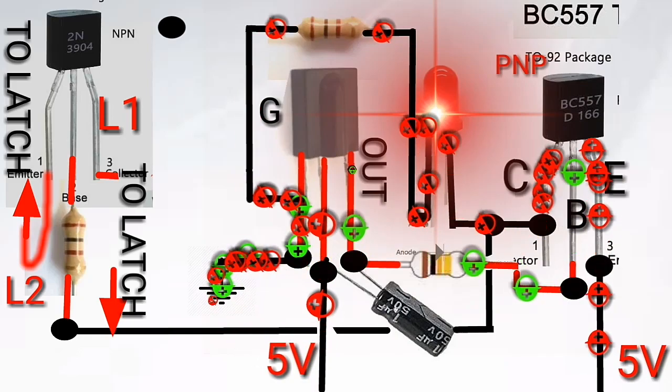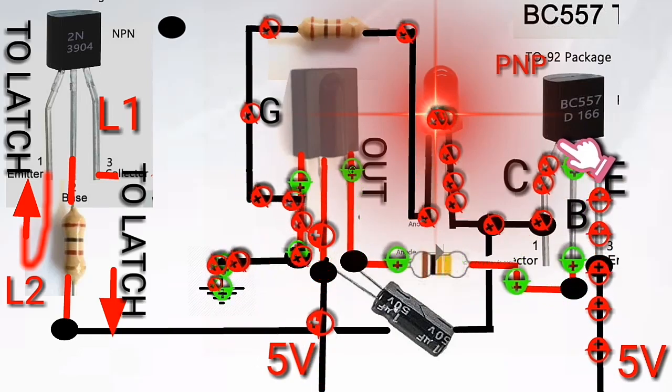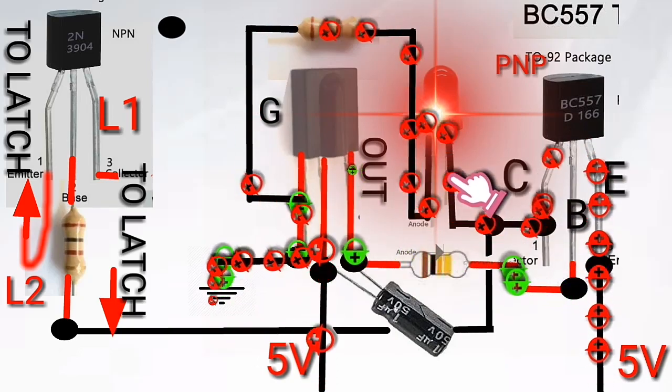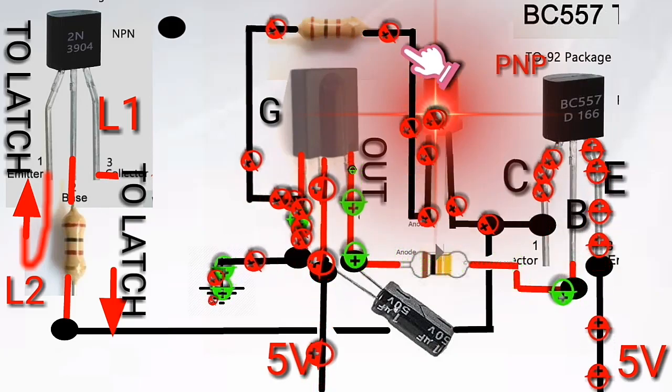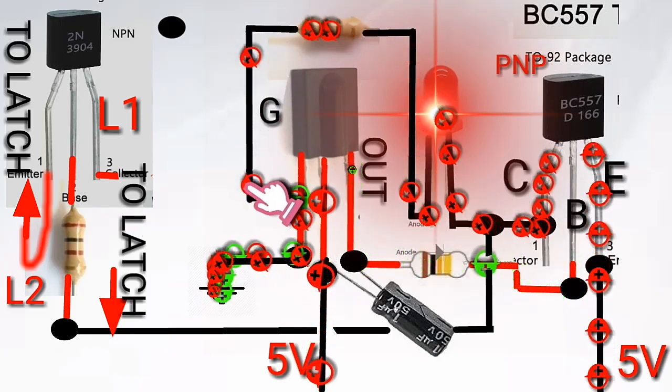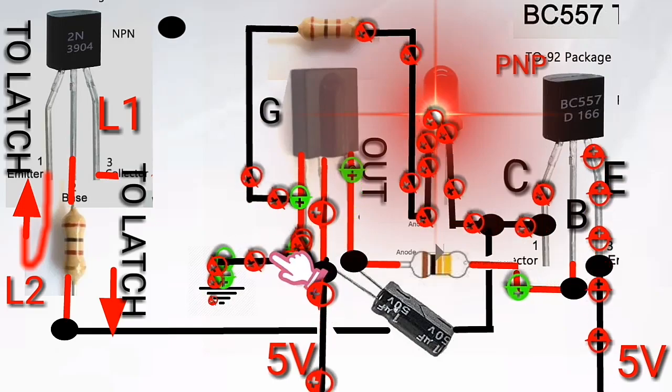Some current going out to the collector enters the LED and goes back to the ground.